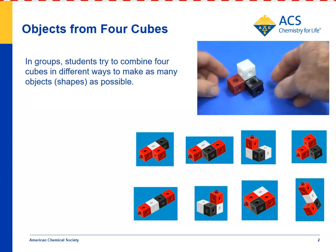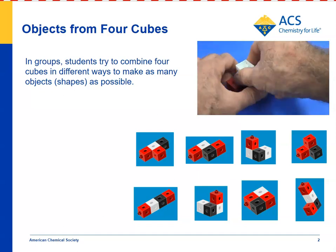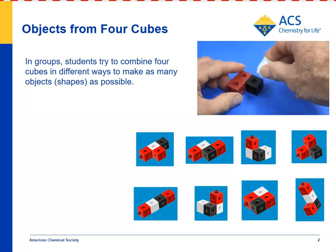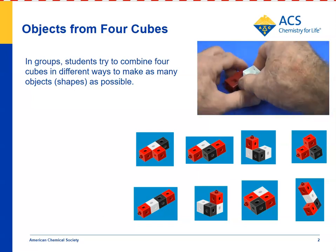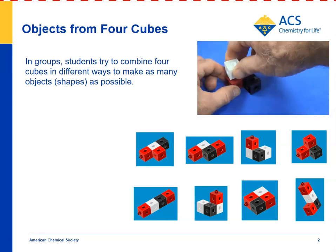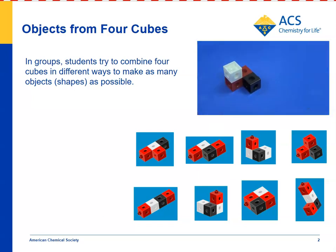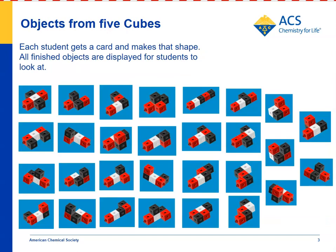There's a total of eight different objects or shapes that students can make from just four cubes. After student groups have come up with the eight different objects and you've shown them by posting the cards in the classroom, you can give each student five cubes of any color, and each student gets a card with a different shape.